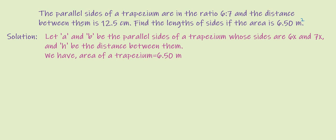The question is: the parallel sides of a trapezium are in the ratio 6 is to 7, and the distance between them is 12.5 cm. Find the lengths of the sides if the area of the trapezium is 6.5 m².